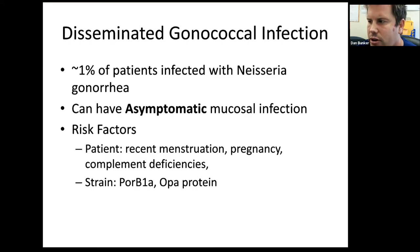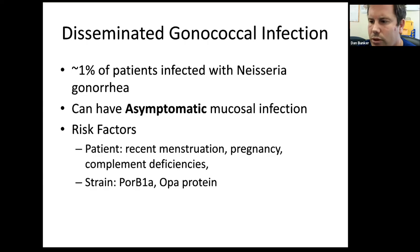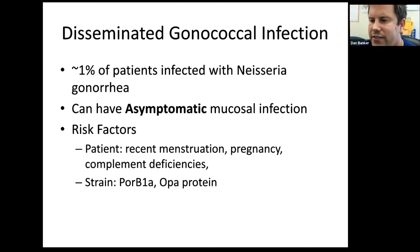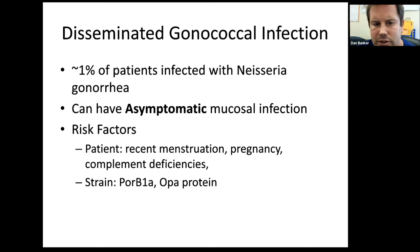The initial infection can be asymptomatic, especially in women. Even if they're not having urethritis, you cannot rule this out based on the absence of primary mucosal infection symptoms. To make the diagnosis you need a compatible clinical presentation and finding gonorrhea somewhere on the patient — you have to do urine, swabs of the throat, anus, and anywhere else they could have a primary infection.